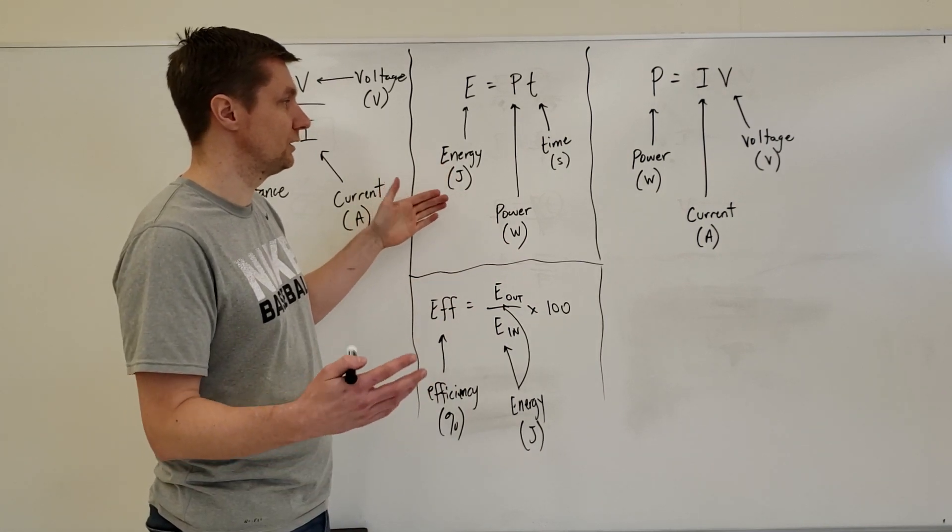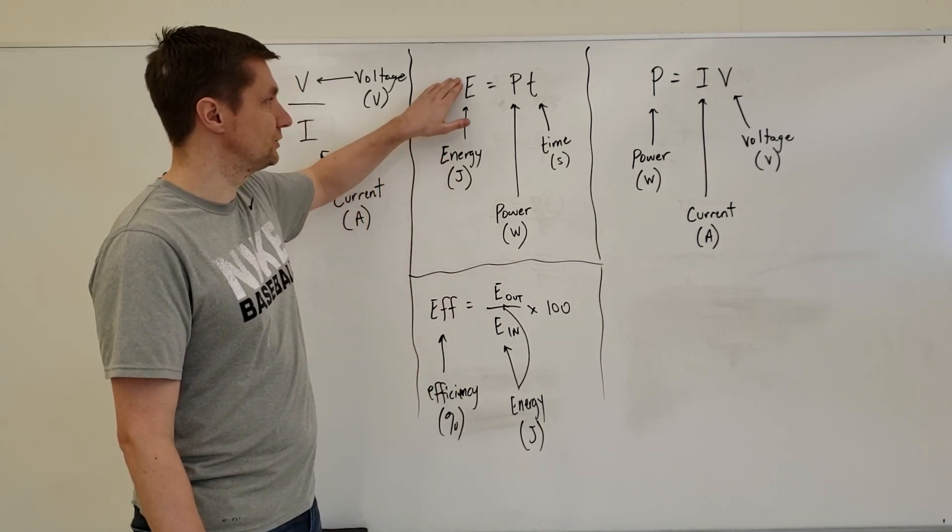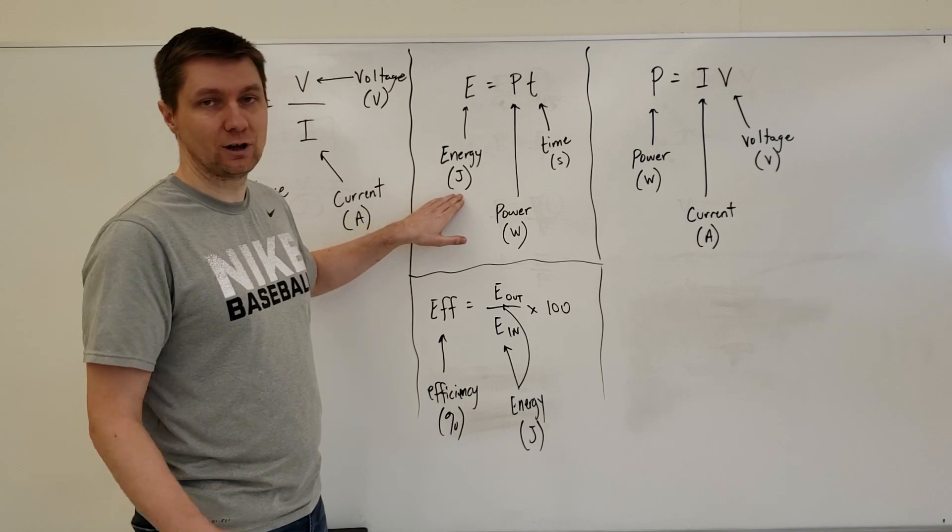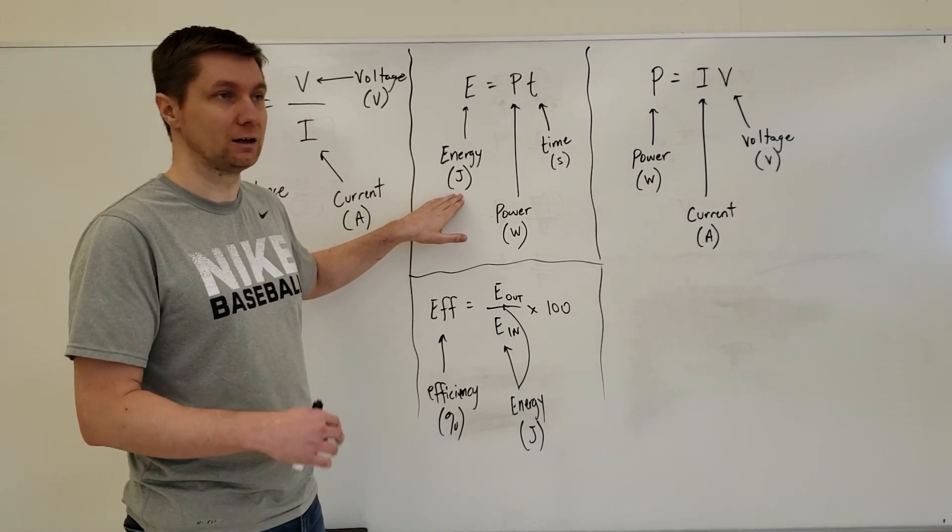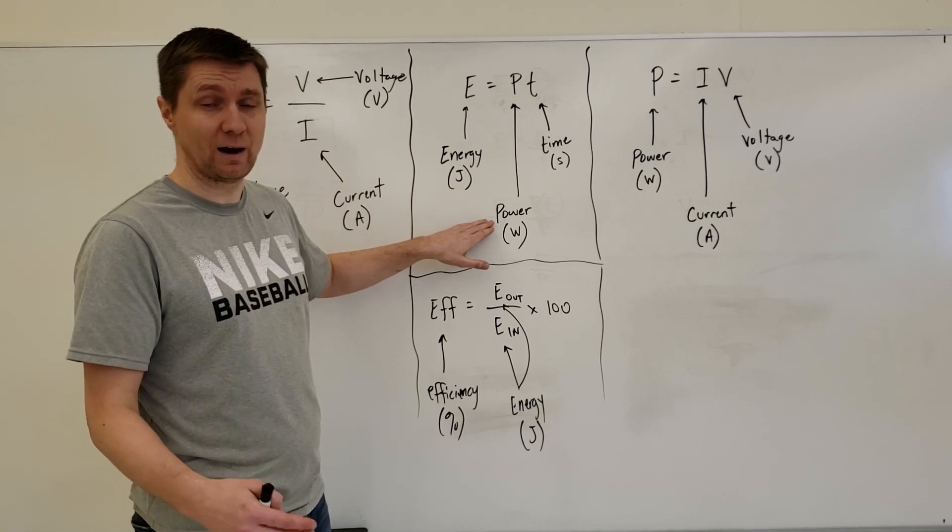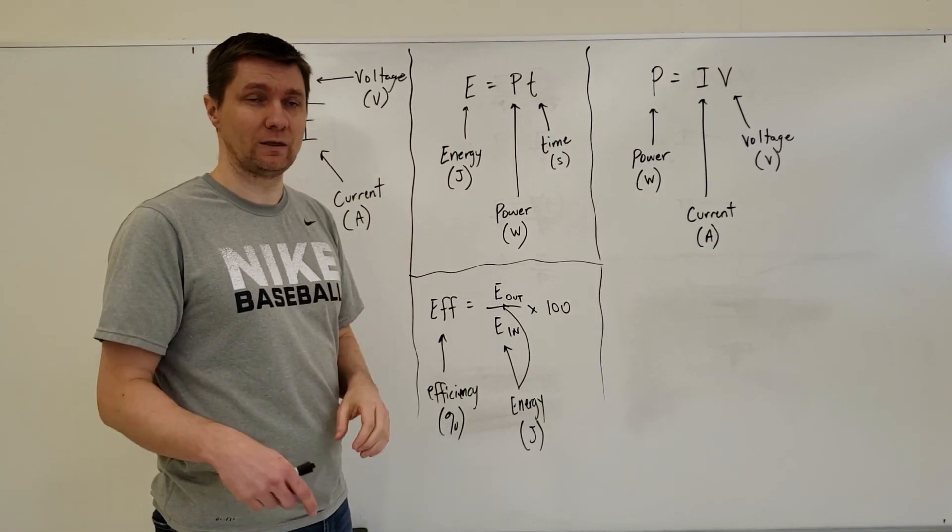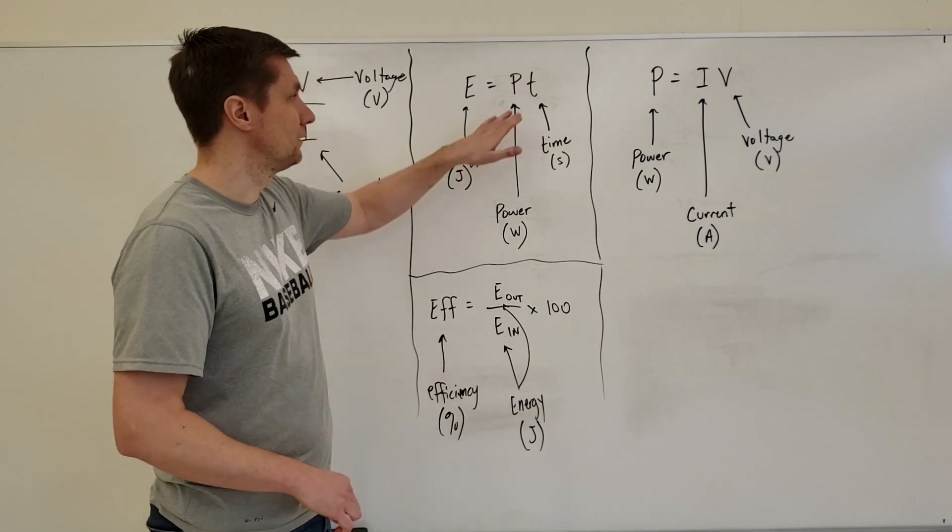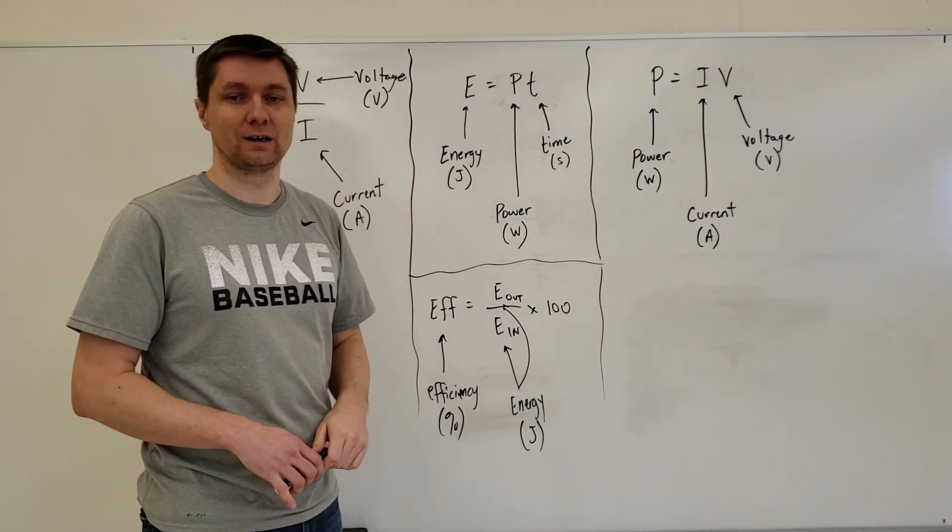The two new ones you need to be aware of: E is energy measured in joules denoted by J, P is power measured in watts denoted by W, and T is time measured in seconds.